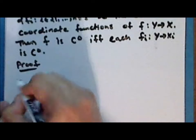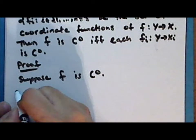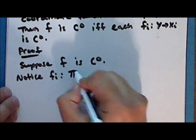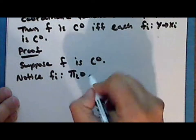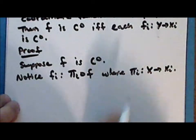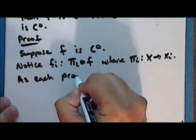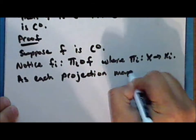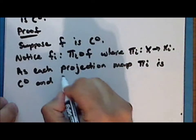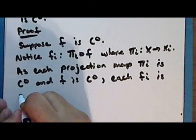Proof. Suppose that the function f is continuous. Notice that the i-th coordinate map is the composition of the i-th projection map with the function f. So as each projection map is continuous and the function f is continuous, each coordinate function f sub i is continuous.